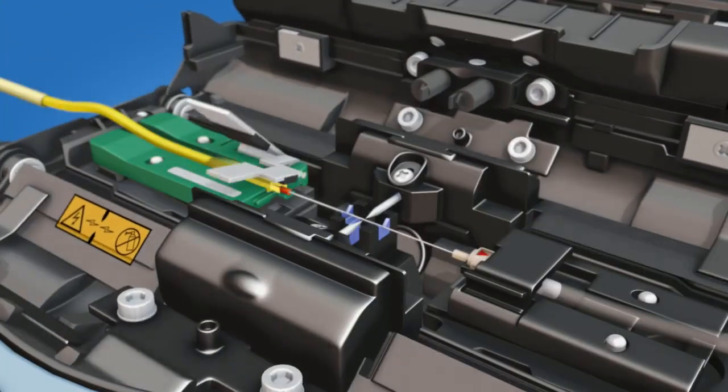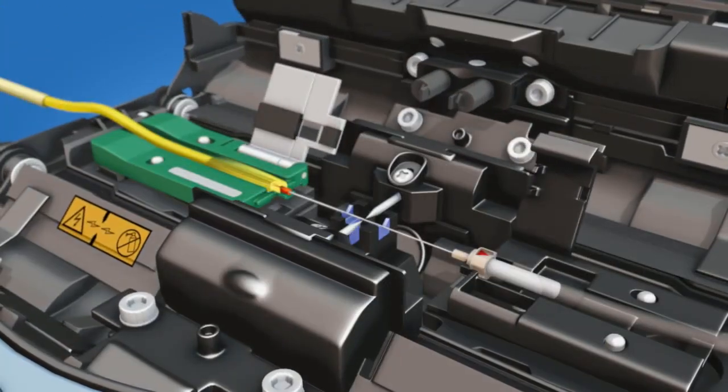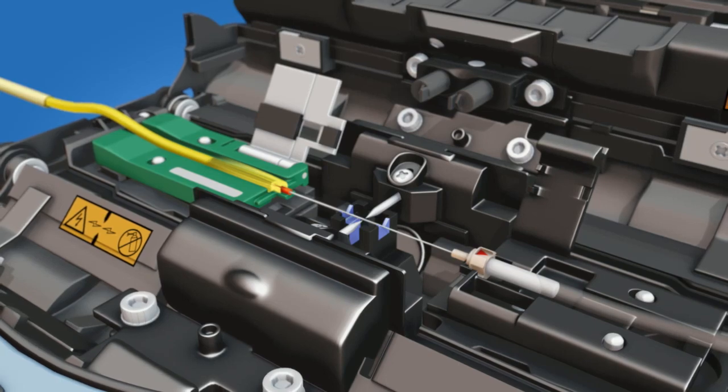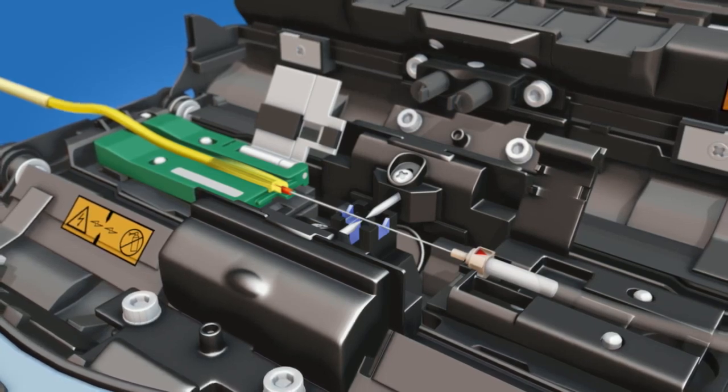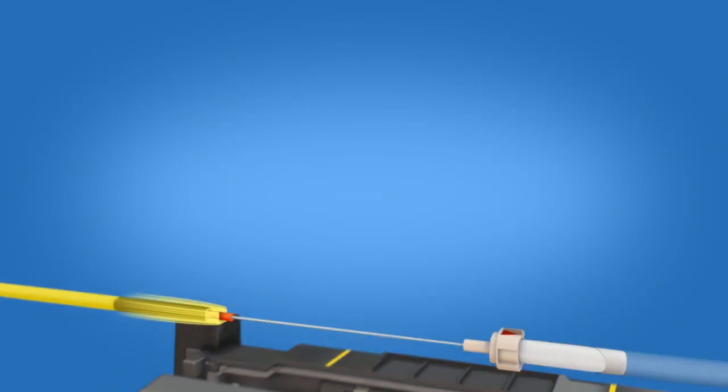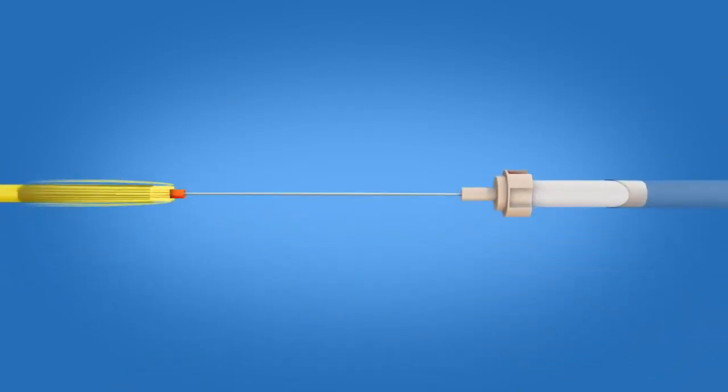Open the fiber holder and the ferrule unit holder clamps after the splicer has performed a tension test on the splice. Continue to keep tension on the splice while removing it from the fusion splicer.